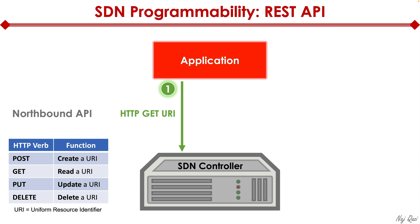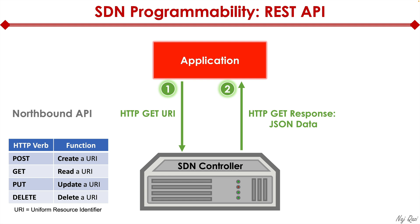Now, back to my example here — step one is HTTP GET URI. So I'm saying go to router one in my data center and pull all the interfaces that are live and all the configuration associated with those interfaces. This GET is basically a read request for that object. The SDN controller is then going to go talk to that network device that's attached in the southbound direction. Then once it reads and gets that information, it's going to come back to my application with the HTTP GET response.